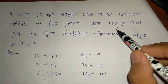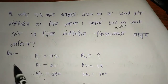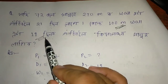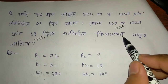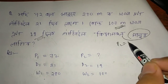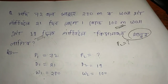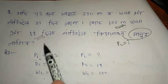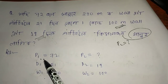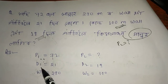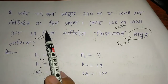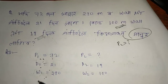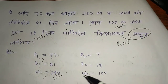The time will tell us: if the time is in 1 meter, P2 is 14 hours. For the second question, P1 was given as 72 hours, D1 was given as 21 days, and W1 was given as 20 meters.